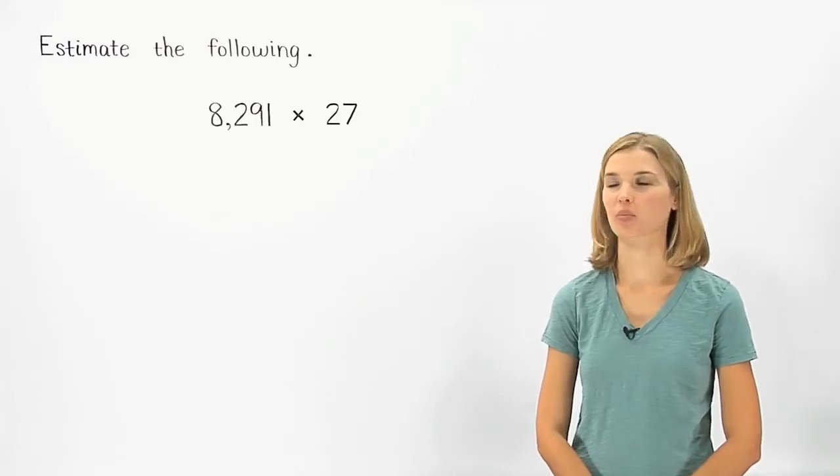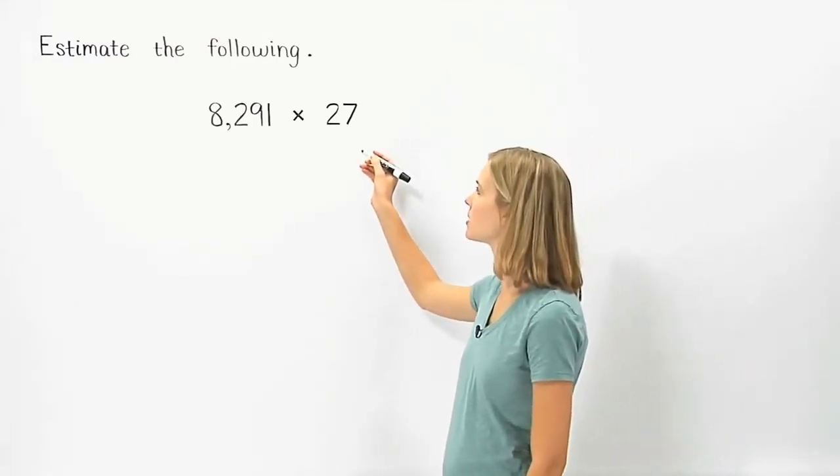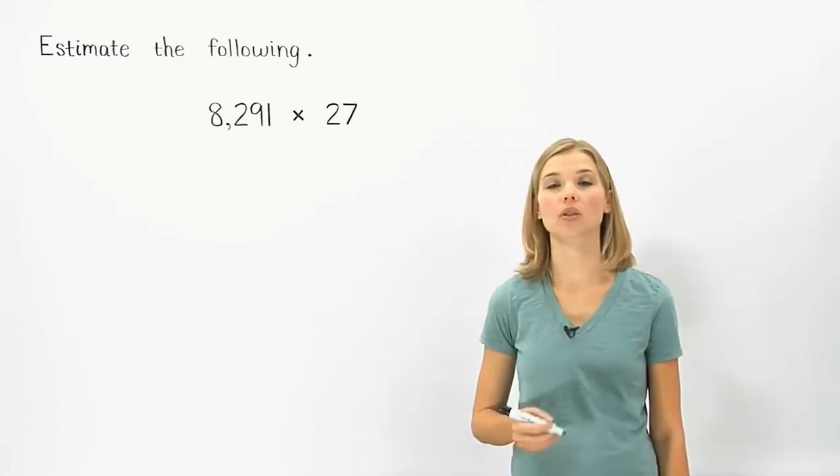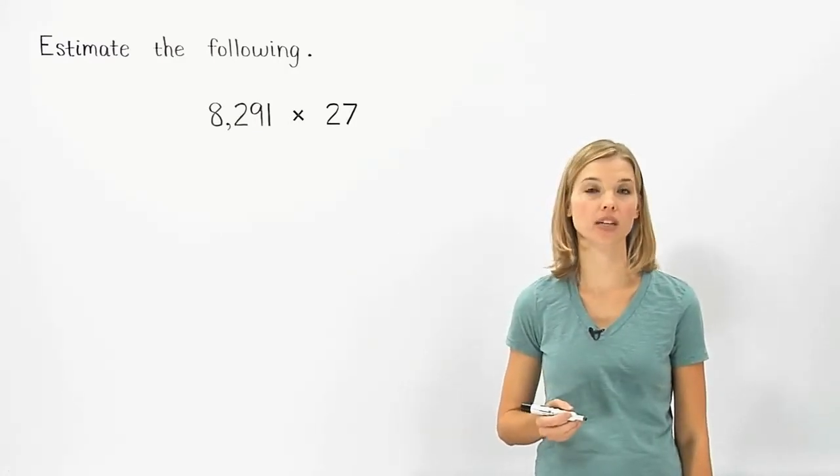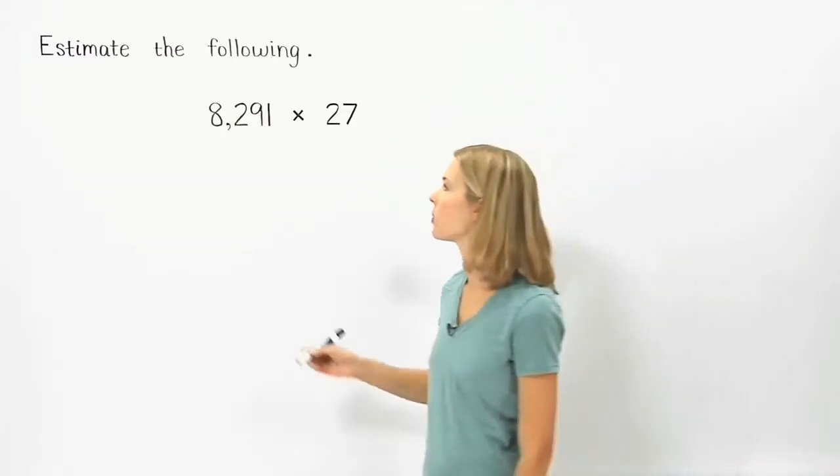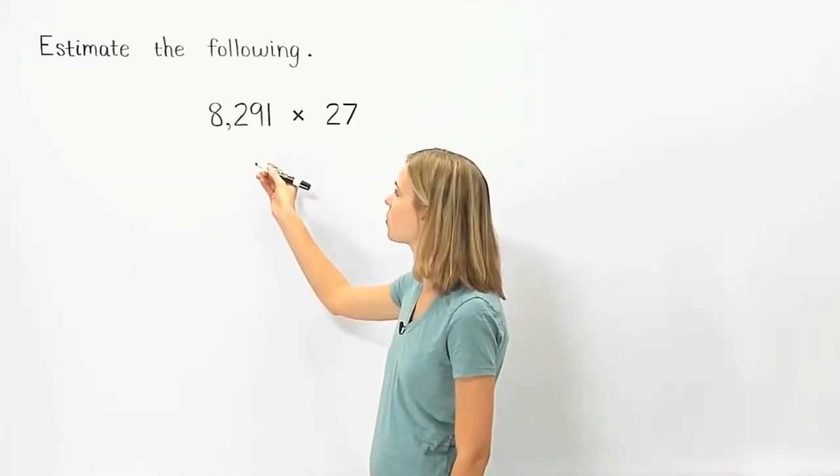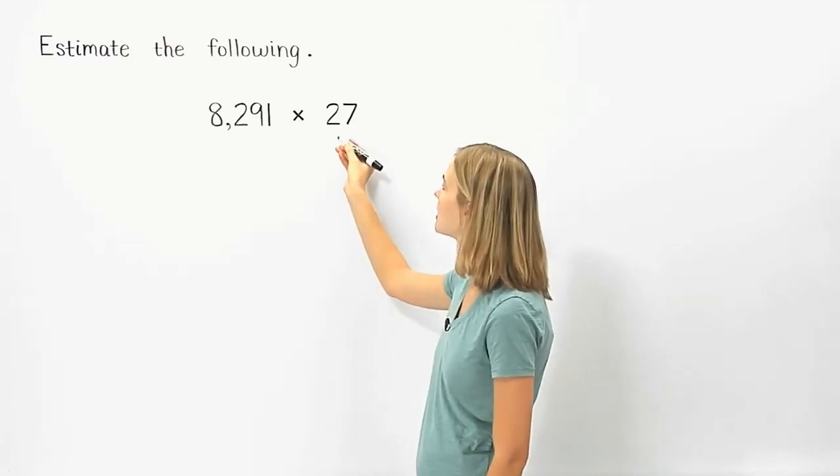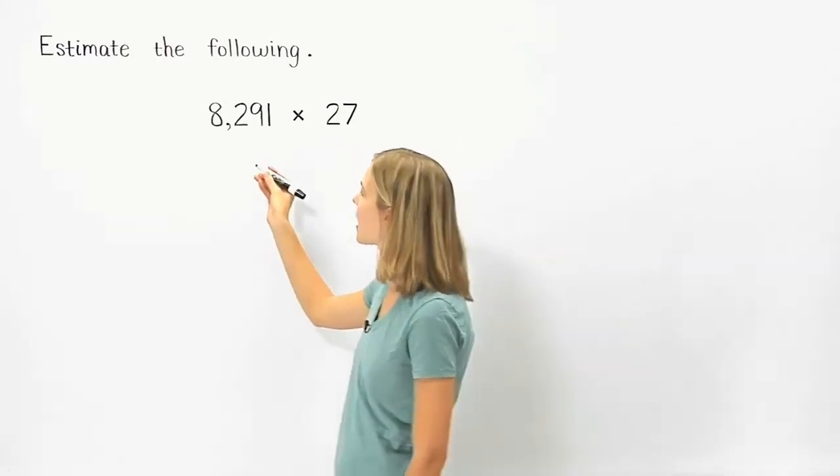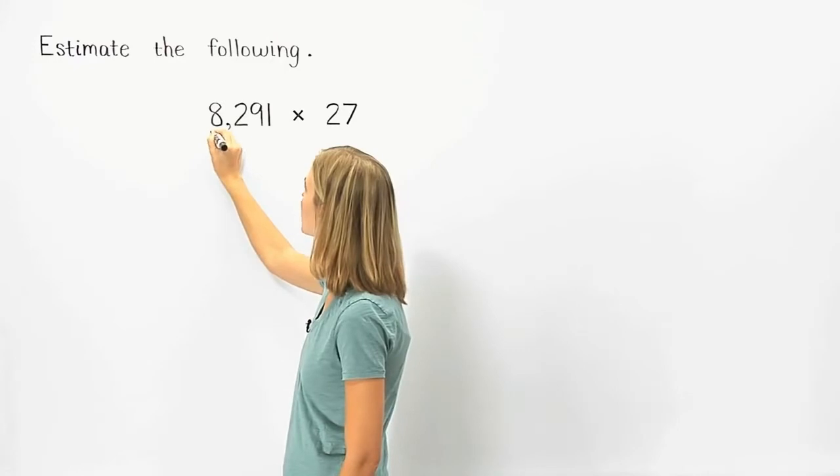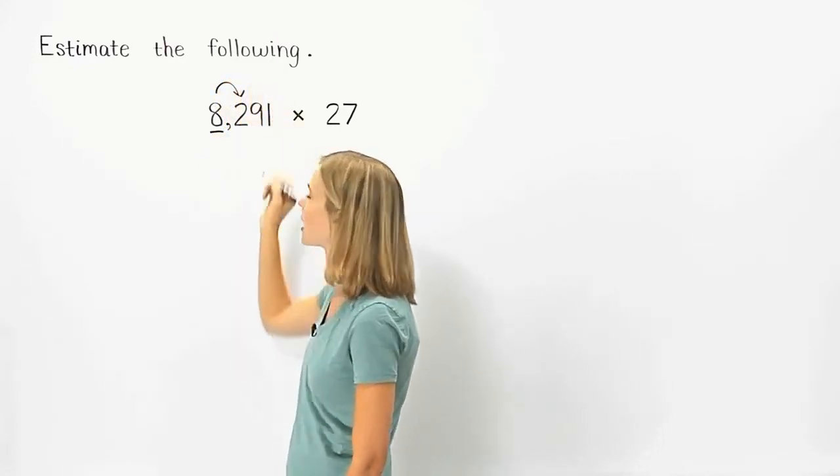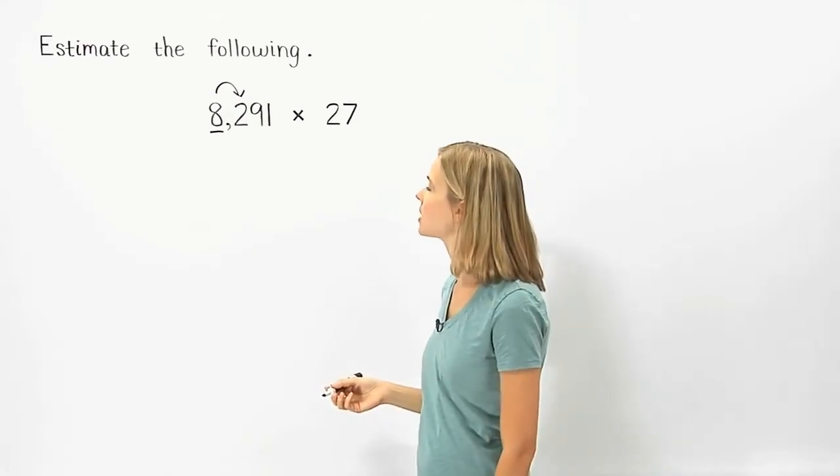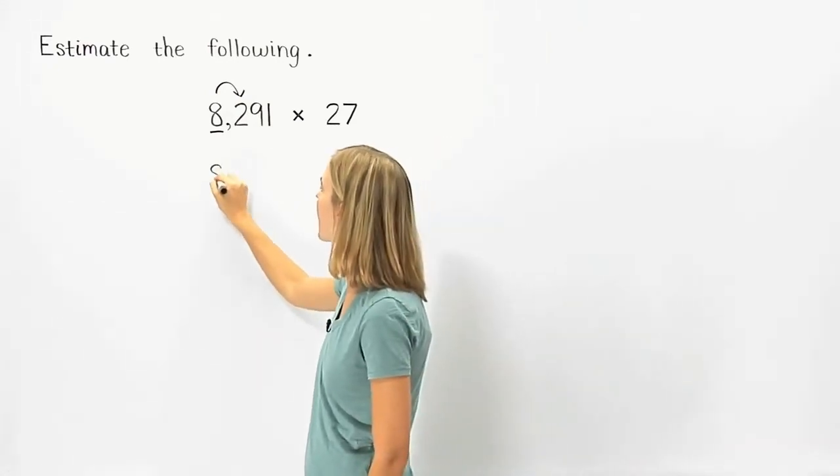To estimate the product of 8,291 times 27, we first round so that each number contains only one non-zero digit. We round 8,291 to the nearest thousand and we round 27 to the nearest ten. To round 8,291 to the nearest thousand, the 2 to the right of the rounding place tells us to round down. So 8,291 rounds down to 8,000.